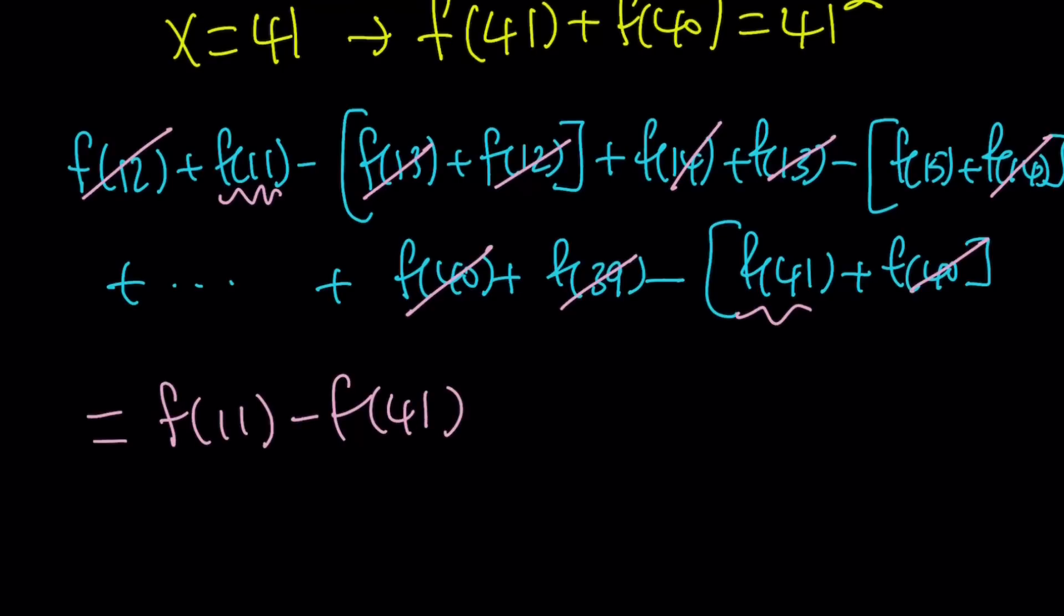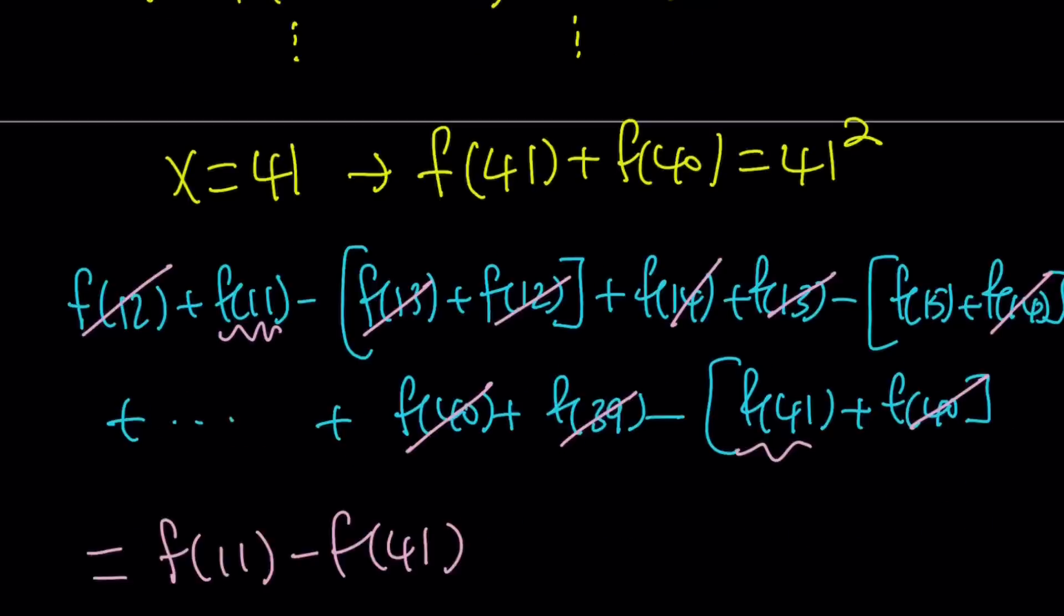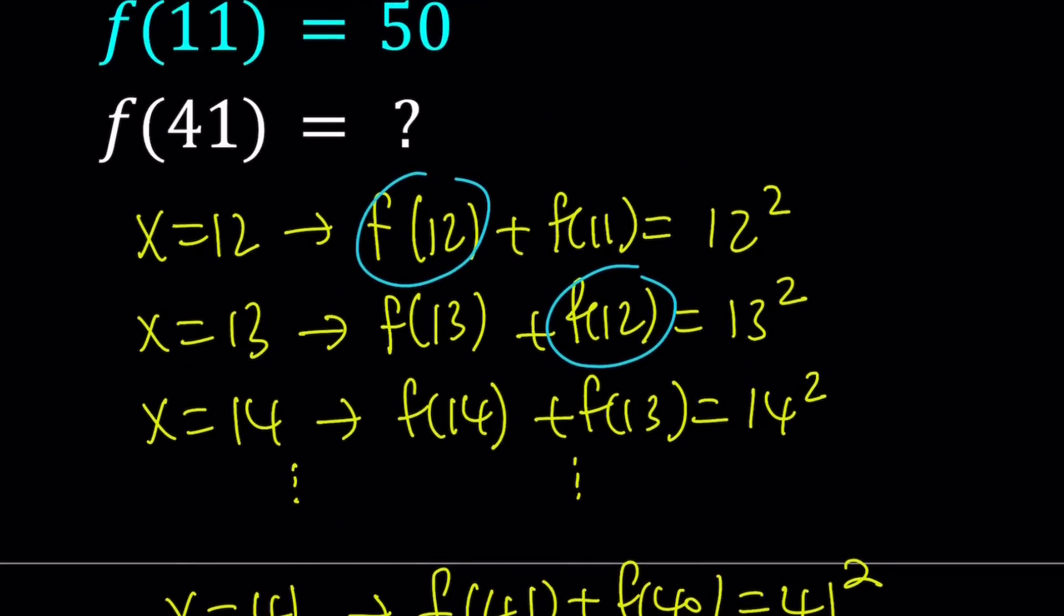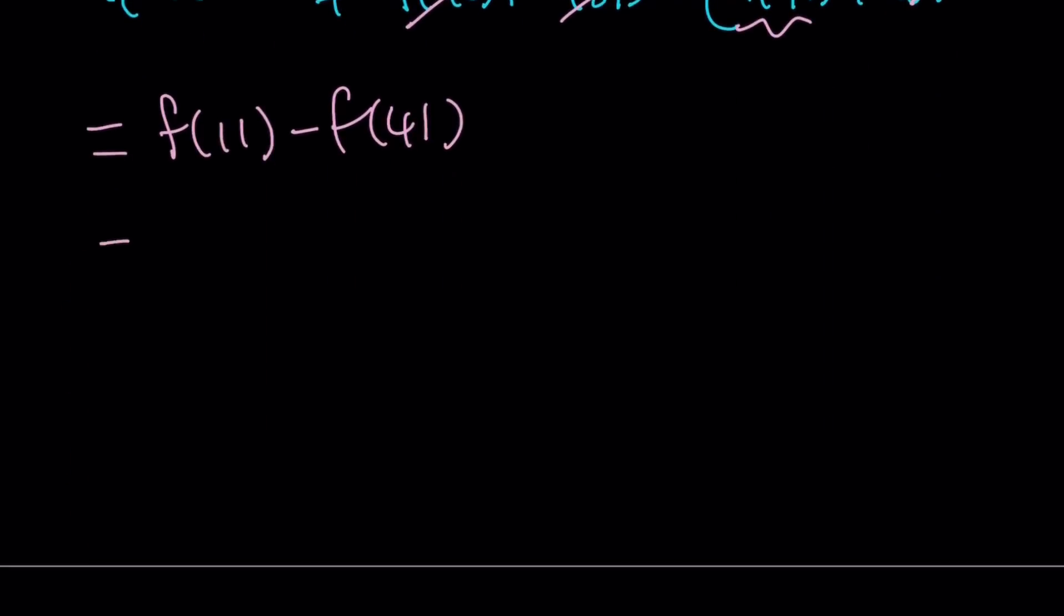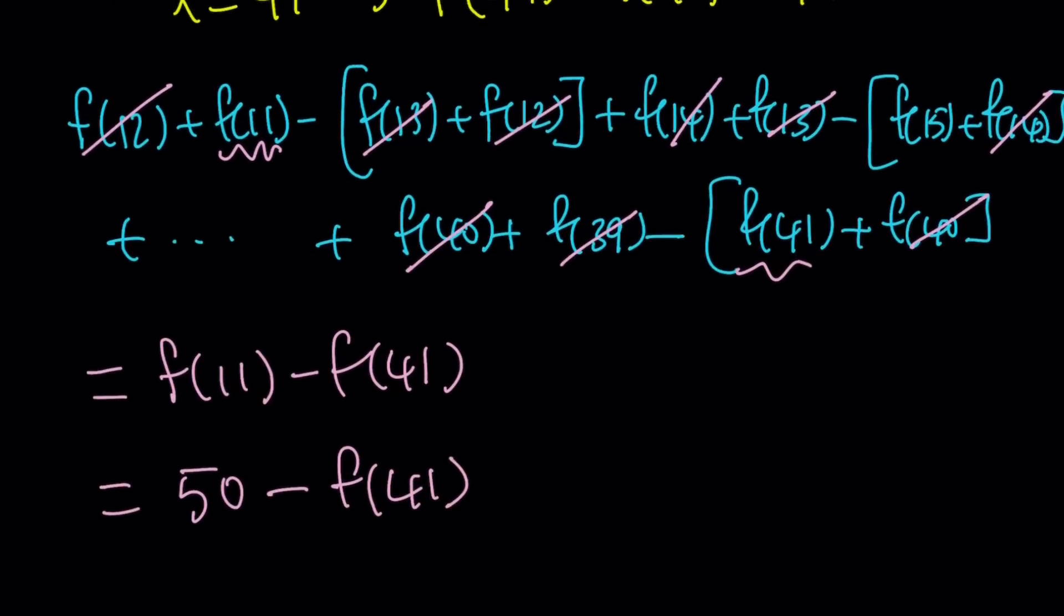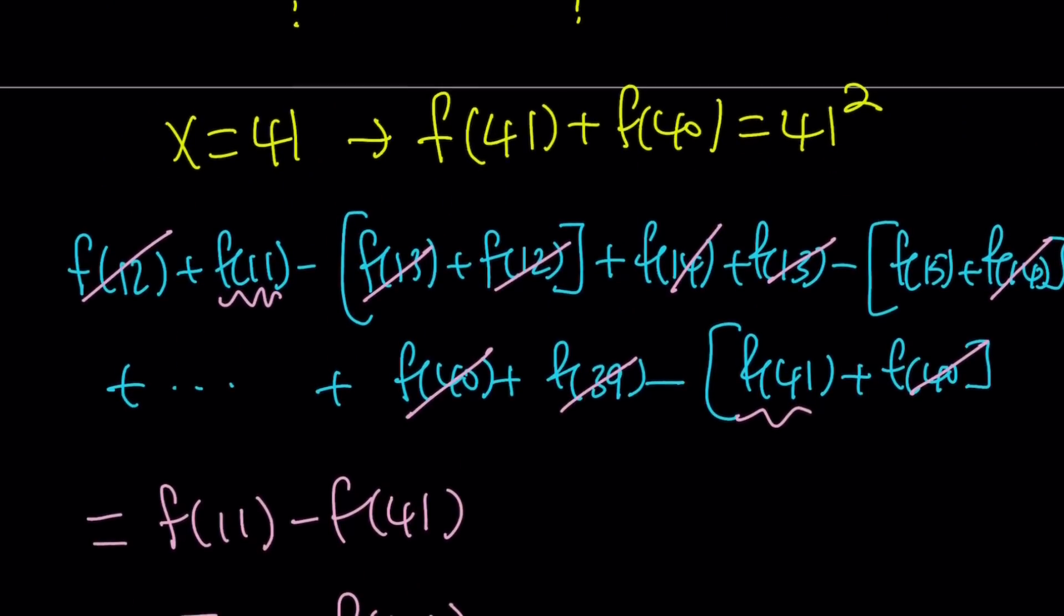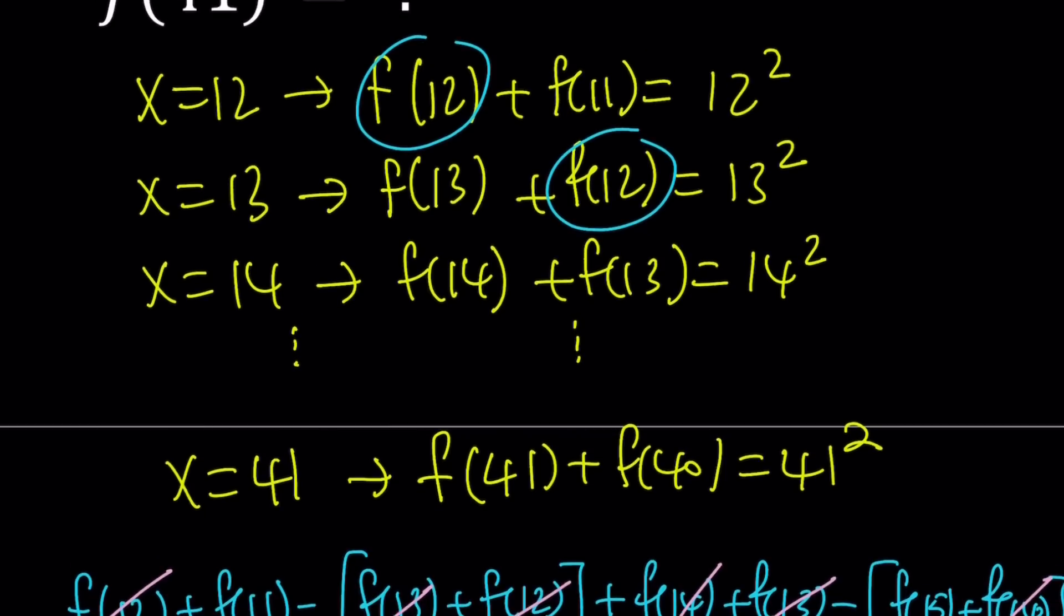But I do know what f of 11 is. Remember, f of 11 was given as 50. So if you replace f of 11 with 50, the answer is going to be 50 minus f of 41. But think about it for a minute. Where do we get this alternating sum from? We get it from here.